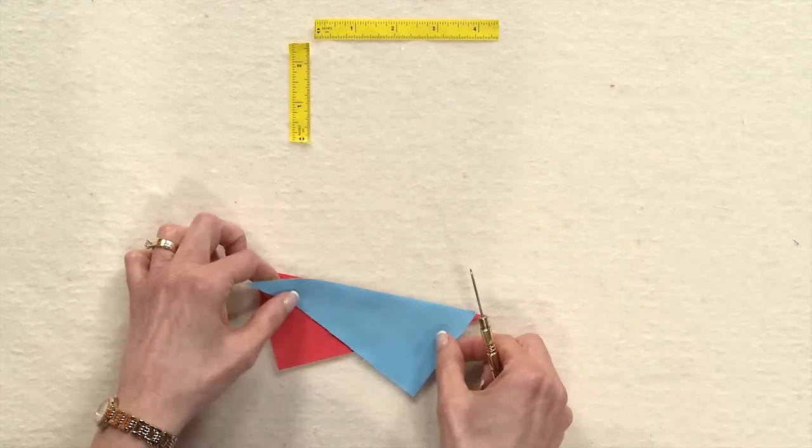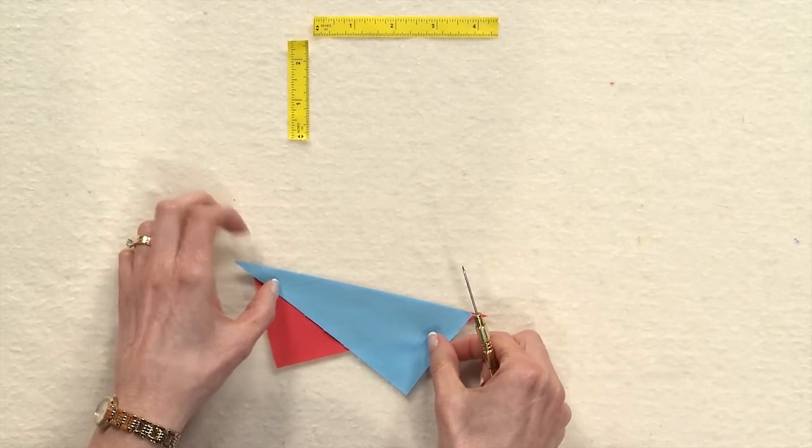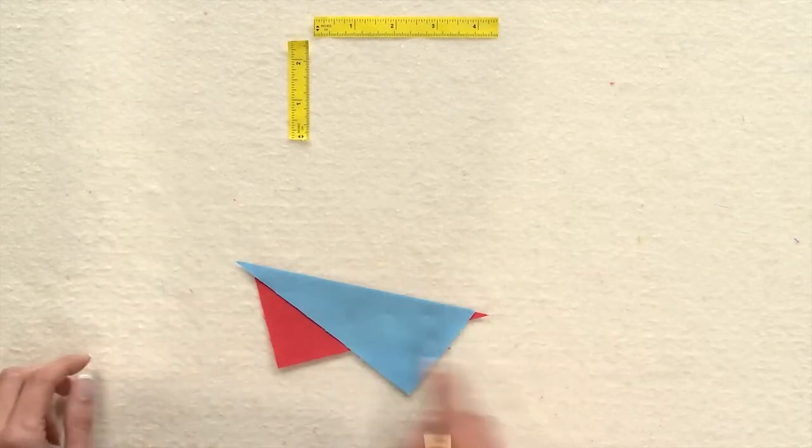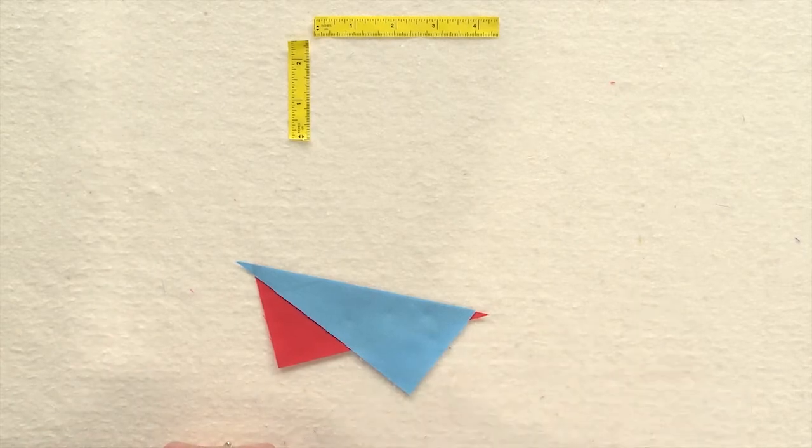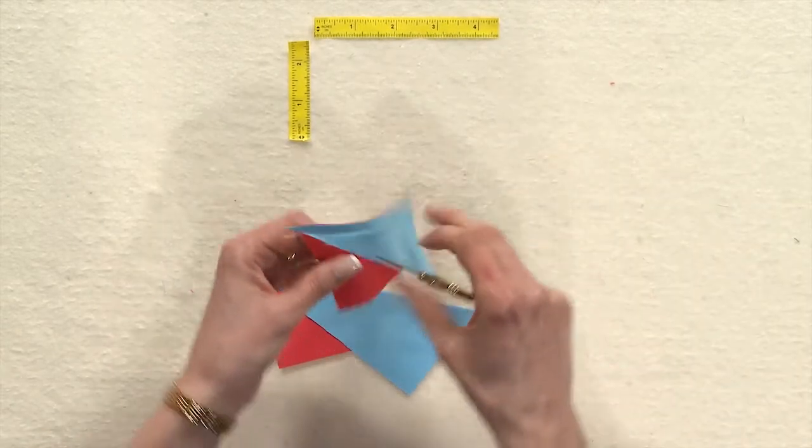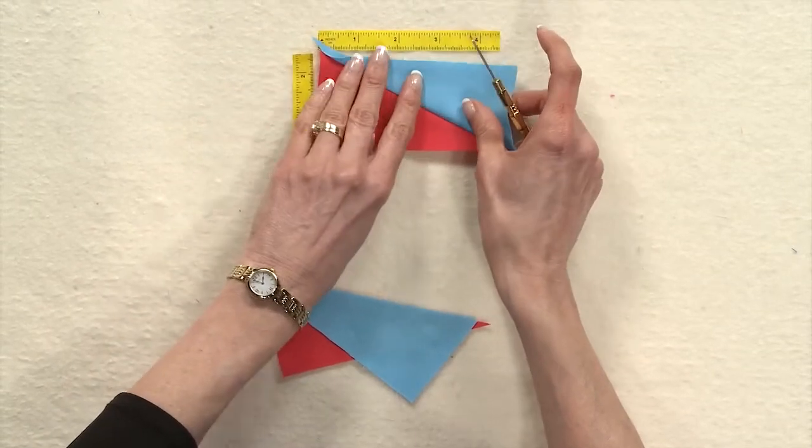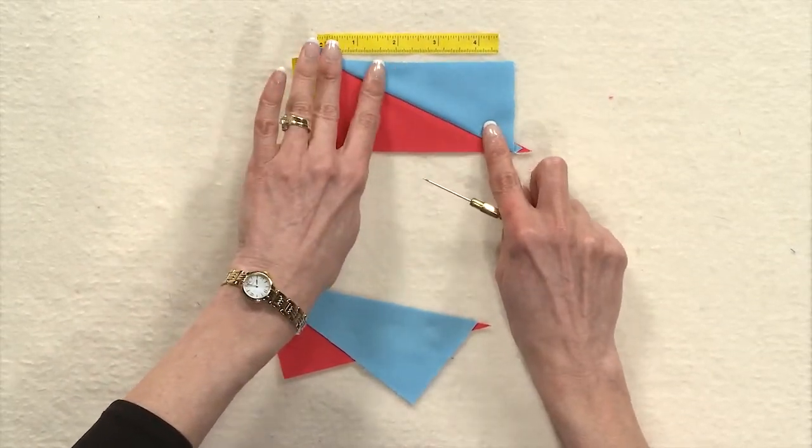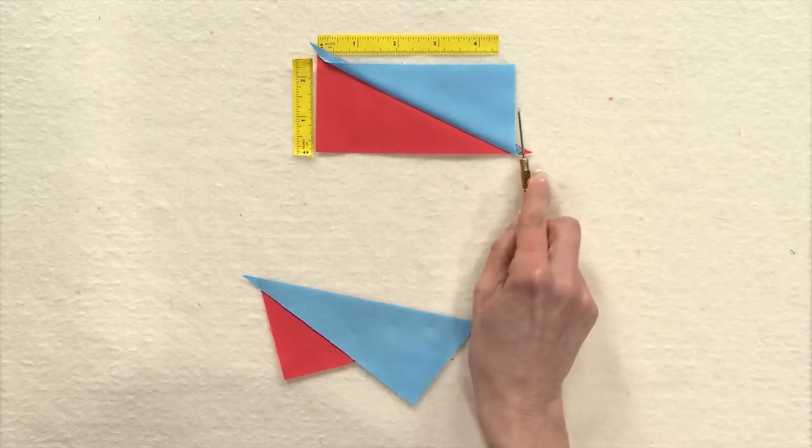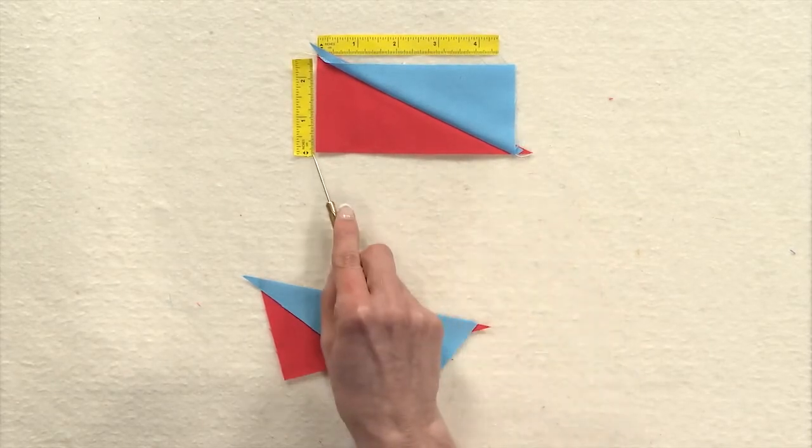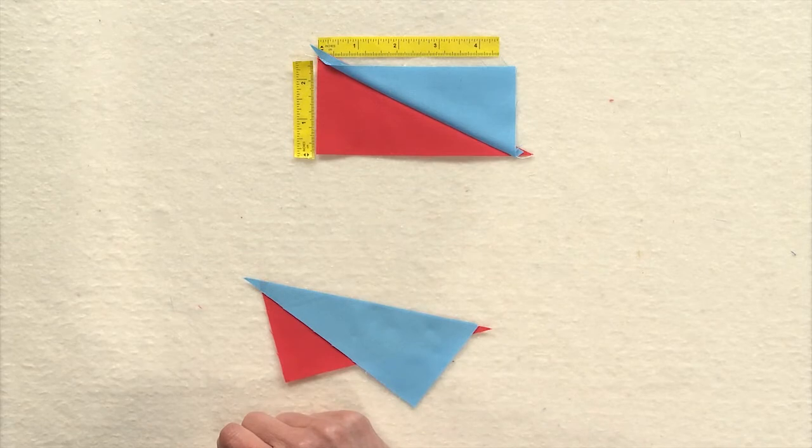A lot of people think that maybe offsetting the two triangles by about a quarter of an inch on each end will work. When I sew those two together and open that up I can see that my rectangle is still too long on this end and still too short on this end. So what to do?